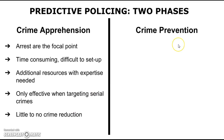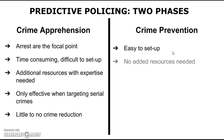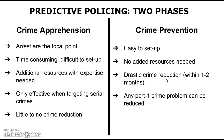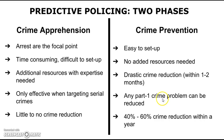The other phase, crime prevention, on the other hand, is very easy to set up. You don't need additional resources. Drastic crime reduction can be attained within one or two months. Any Part 1 crime problem can be reduced. And at the end of a year, you should and will attain a 40 to 60 percent crime reduction.